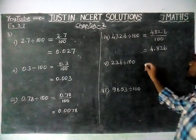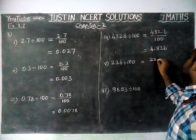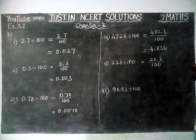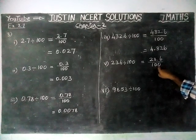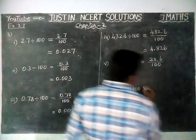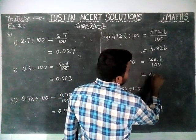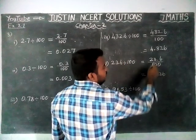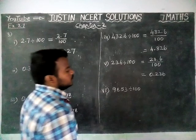Fifth question: 23.6 divided by 100. Here also we have two zeros in the denominator, so we have to move two steps to the left-hand side. The answer is 0.236.